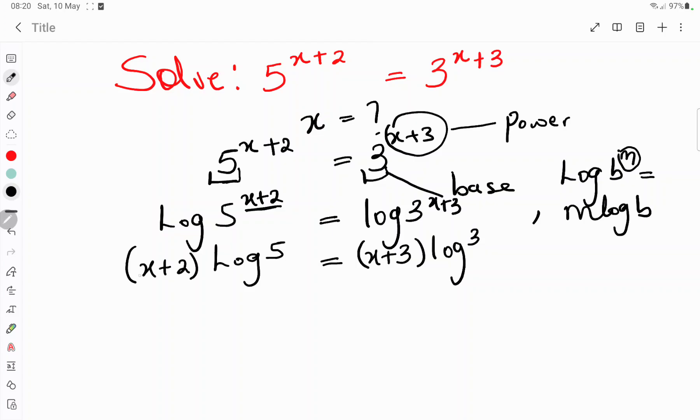Then the next thing we have to do, since our goal is to find the value of x, this particular x here, it is in both sides. So the next thing we have to do is to open up the bracket. When log 5 multiply x, you have it as x log 5. And when log 5 multiplies 2, you have it as 2 log 5. Then it is equal to, same thing is applied to this term. We use log 3 to multiply everything here. We have it as x log 3 plus 3 log 3.